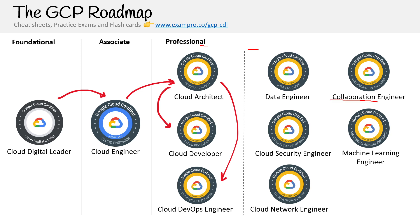The Collaboration Engineer is a very unusually named certification — it's essentially about administration, setting up your organization and networking. It's a very odd name for a certification. If I were going into the specialties, I'd either go for the Cloud Security Engineer, Data Engineer, or Machine Learning Engineer. Cloud Networking — I'm not sure how useful that is, and neither is the Collaboration Engineer certification.